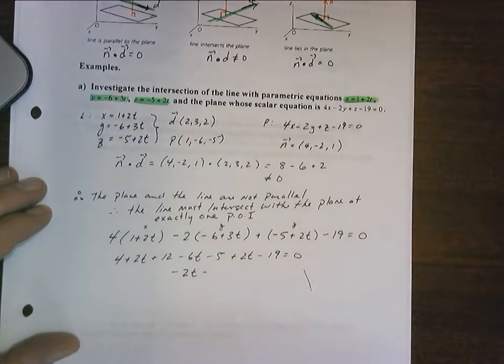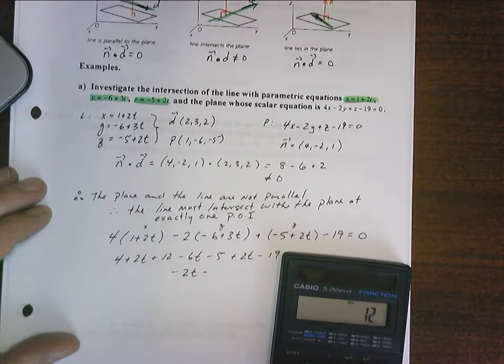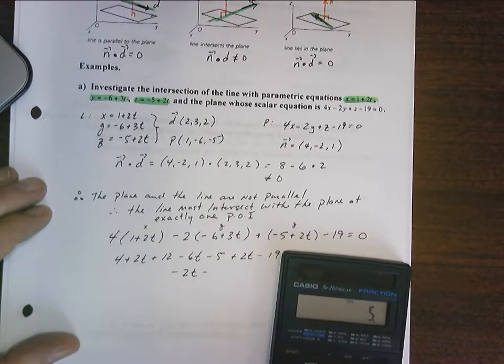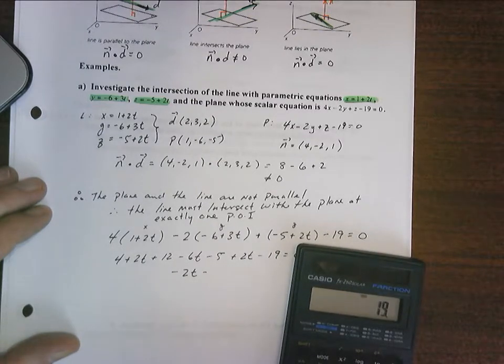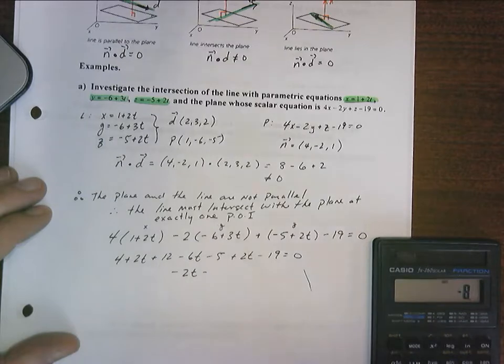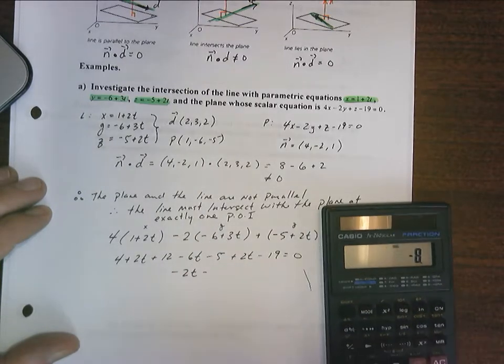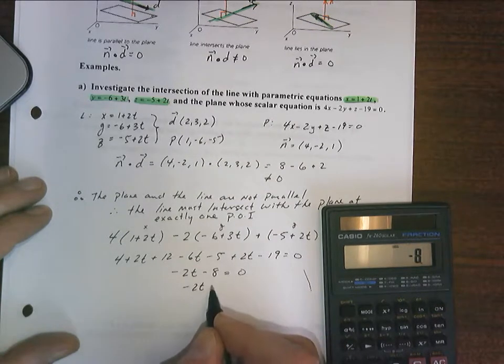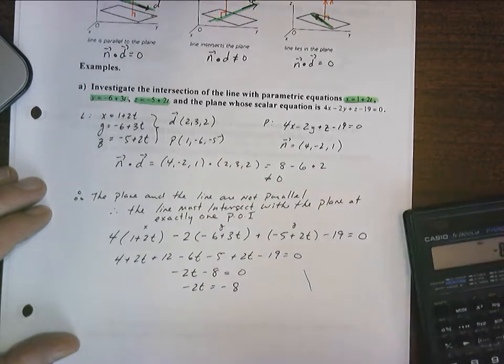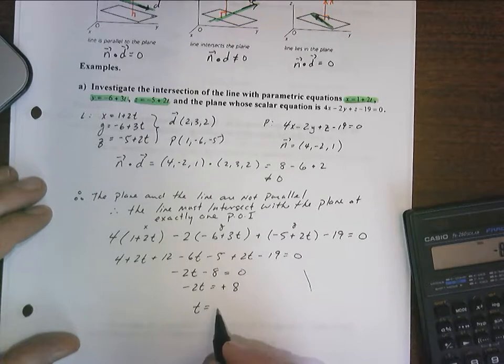Hold on, let's check that again. So I've got 4 plus 12 minus 5, yes, minus 19 is negative 8. Let me check my t's. So this should be 12, negative 6, okay. So that's going to be negative 8 equals 0. Negative 2t equals negative 8. Oh, it's going to move over to the other side, so it's positive. So this will t equals negative 4.